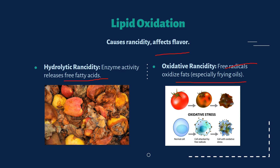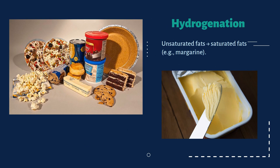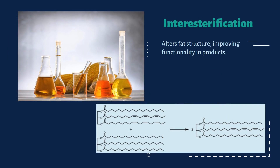Next is hydrogenation — a process that converts liquid oils into solid fats, like turning vegetable oil into margarine. Be careful: this process can create trans fats, which aren't great for health. Next is interesterification, which alters fat structure, improving functionality in products. It modifies fat molecules to improve texture and stability, and is often used in baking.